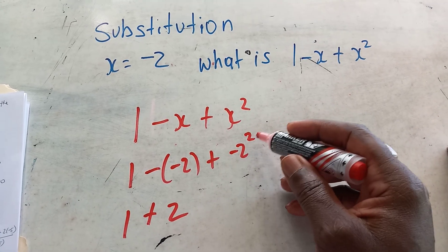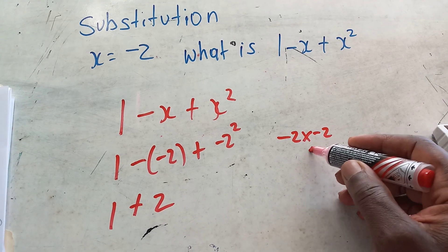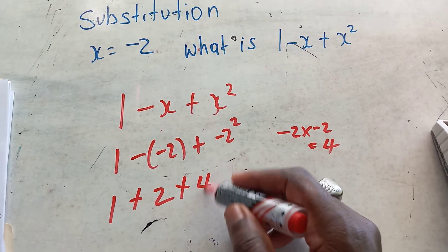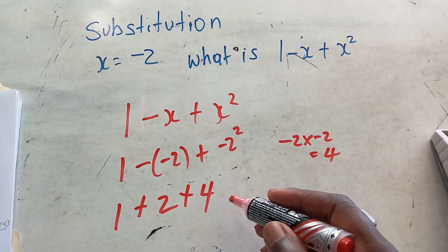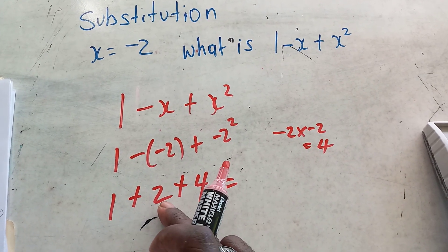Which would be negative 2 times negative 2, and that will equal a positive 4. So we can go ahead and put plus 4 here, and how much would that equal? 2 plus 1 equals 3 plus 4 equals 7.